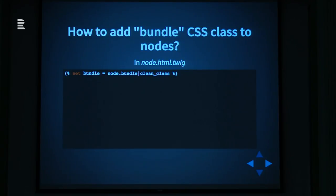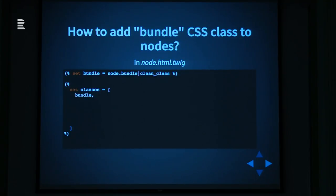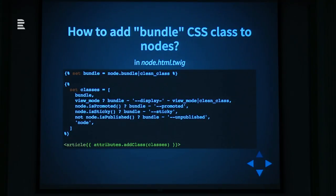Let's create a class from this. We use the set tag again, but in this case we create an array using square brackets. All you have to do is include this variable and you can also add some more information to this classes array. After that, the last step is to add this classes array to your article HTML element in your template. We have the attributes object which has an addClass method, and the addClass method uses the classes array as an argument. That's all - and that makes the display we had on the earlier slide.